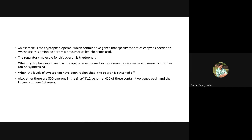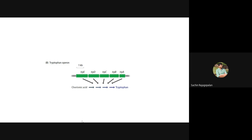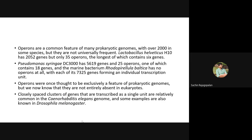There are around 850 different operons characterized in E. coli K12 strain. 450 of these operons contain two genes each, and the longest operon contains around 18 genes. The tryptophan operon contains genes trpA, B, C, D, and E, all of which code for enzymes converting chorismic acid into the essential amino acid tryptophan.